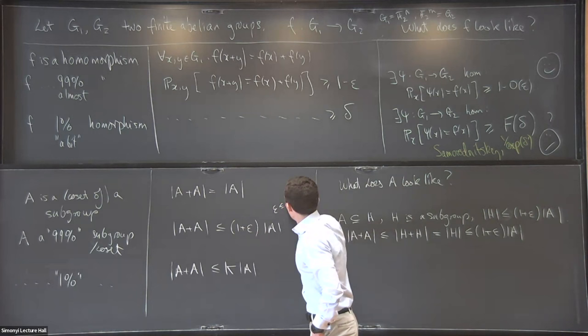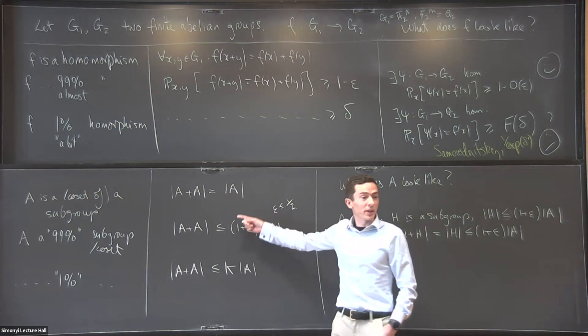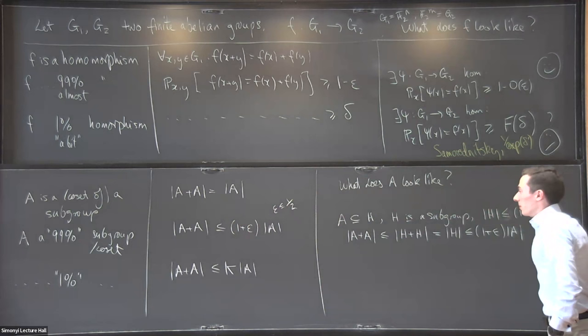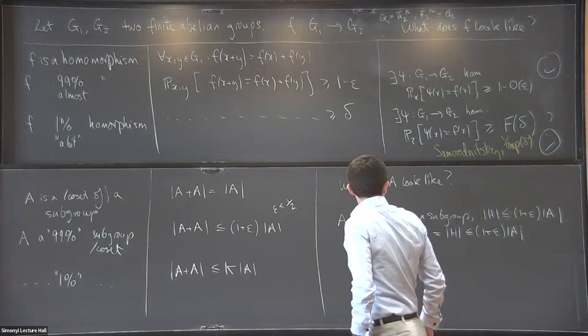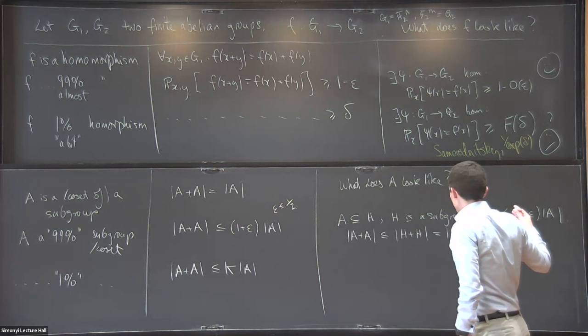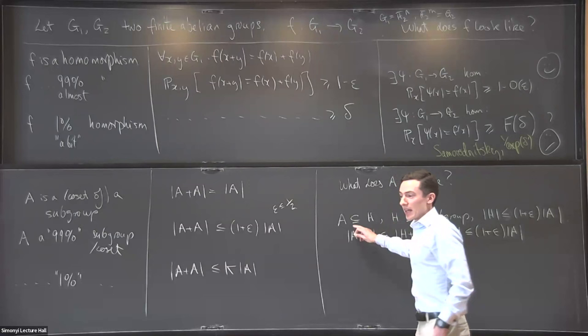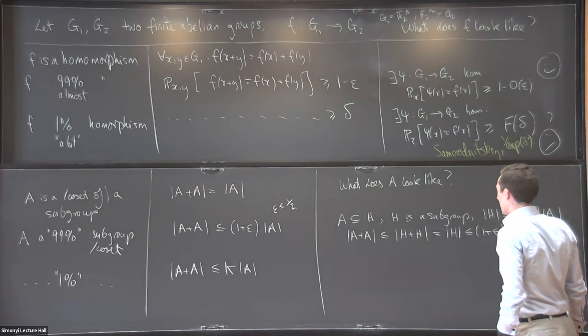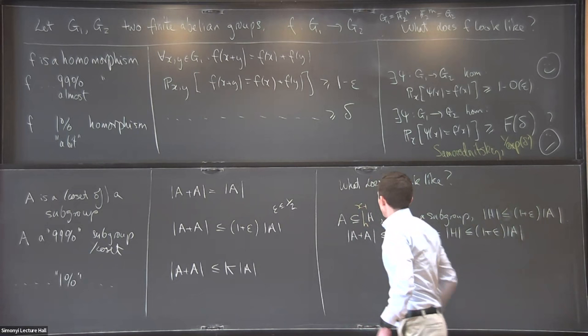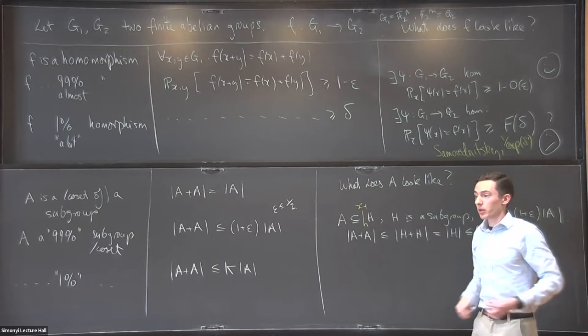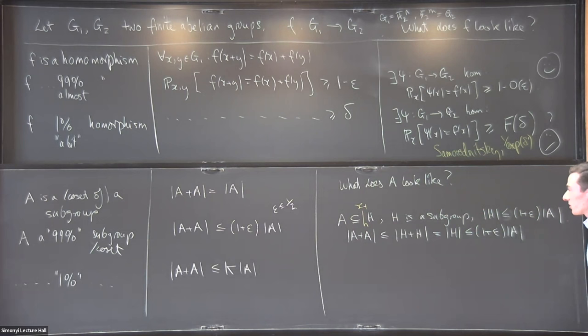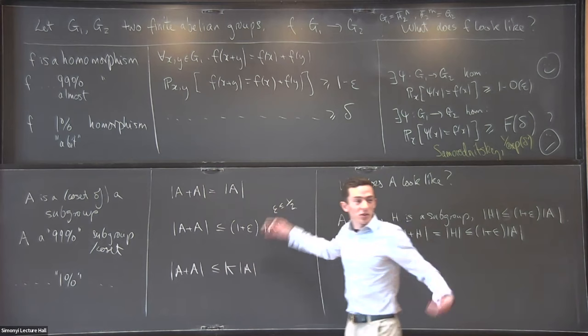As you might guess from social cues, this is the only way to come up with examples — it's if and only if. Anything with doubling constant at most 3/2 is very close to being a genuine subgroup. In the 1% case, if A plus A is growing by a factor of 100 or something, what can you say about A? Maybe A is not contained in a single coset with efficiency 1+epsilon, but maybe it's contained in a coset with efficiency some function of delta: there exists H a subgroup and x such that A is contained in x plus H, and the size of H is at most some function of delta.